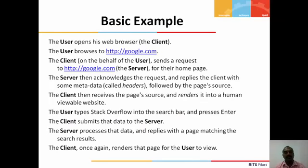A typical usage example goes like this: as a user, you open the web browser, type in the URL google.com, and click send. This request goes as an HTTP request to the server at google.com. The server acknowledges the request and replies to the client with metadata called headers, followed by the page source.